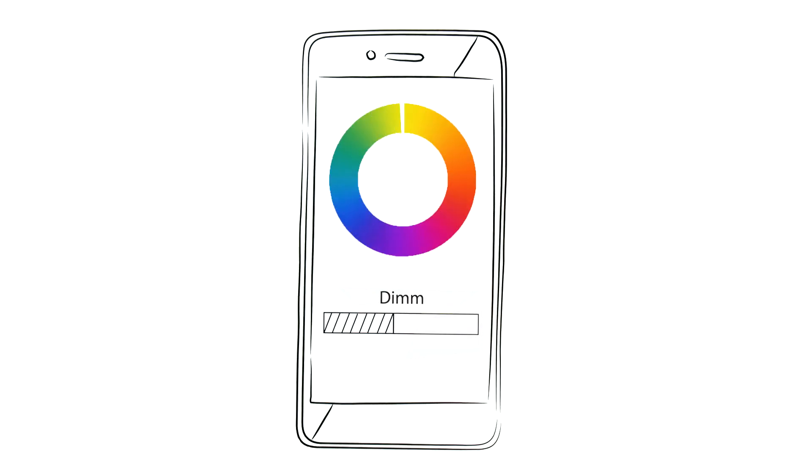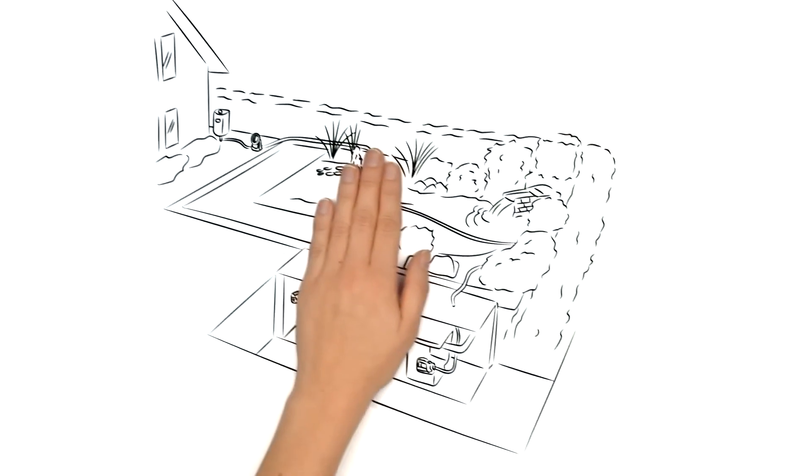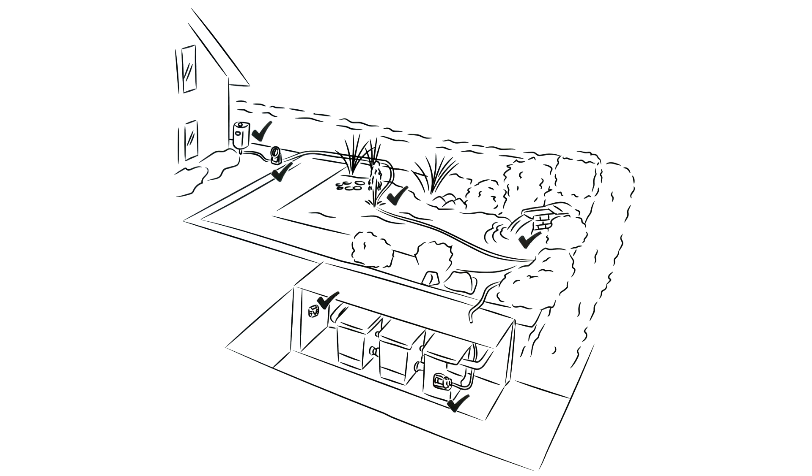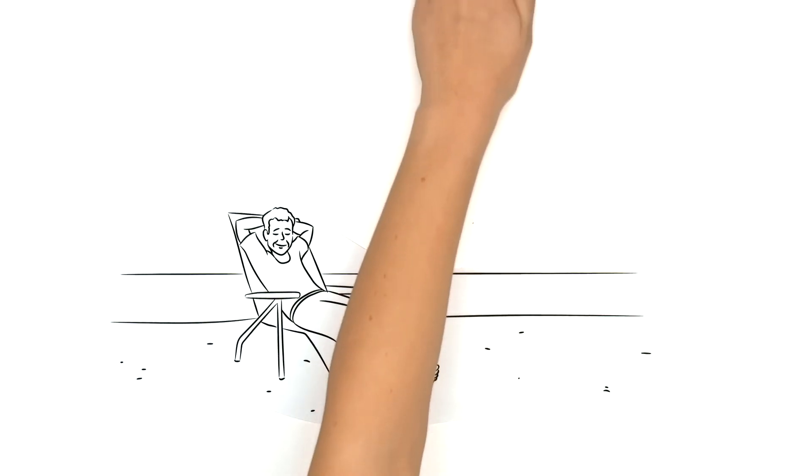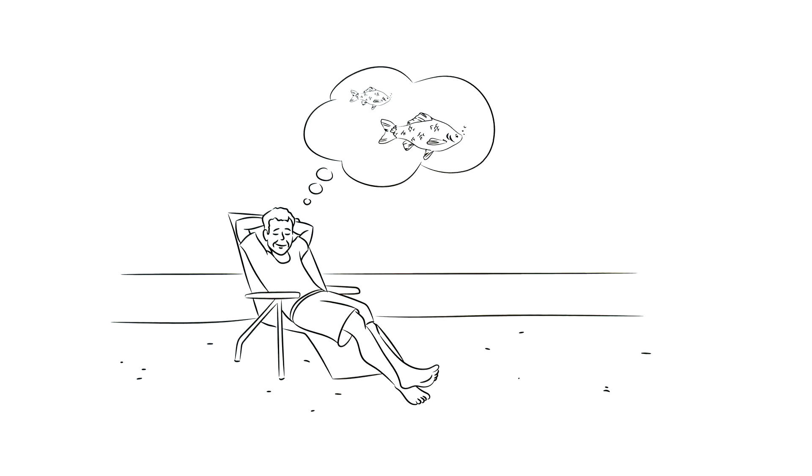Matt is reassured. All the pumps and filters are running properly and the fish are doing well. So he can relax, go back to sleep, and dream of beautiful things. Easy Garden Control from OASA.